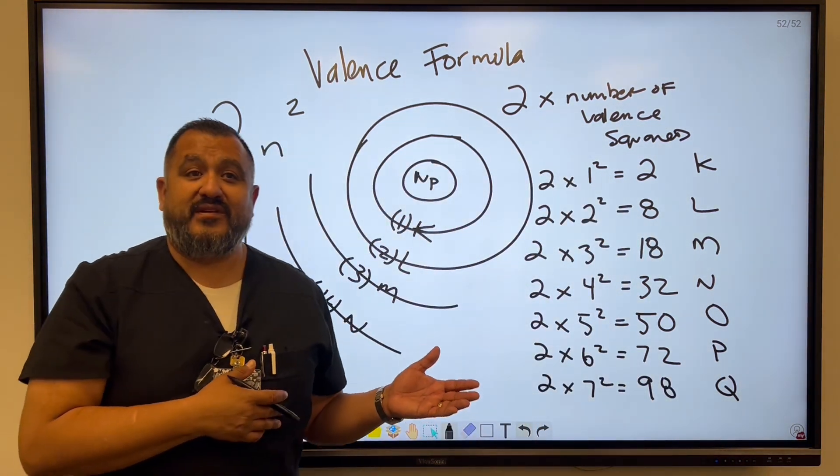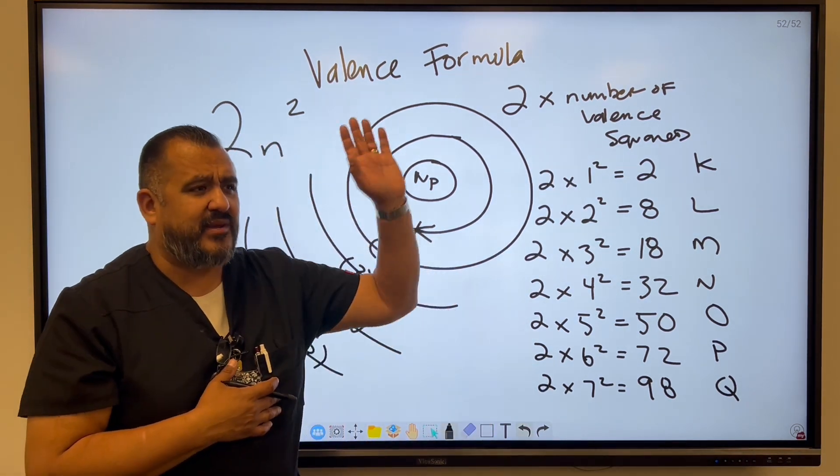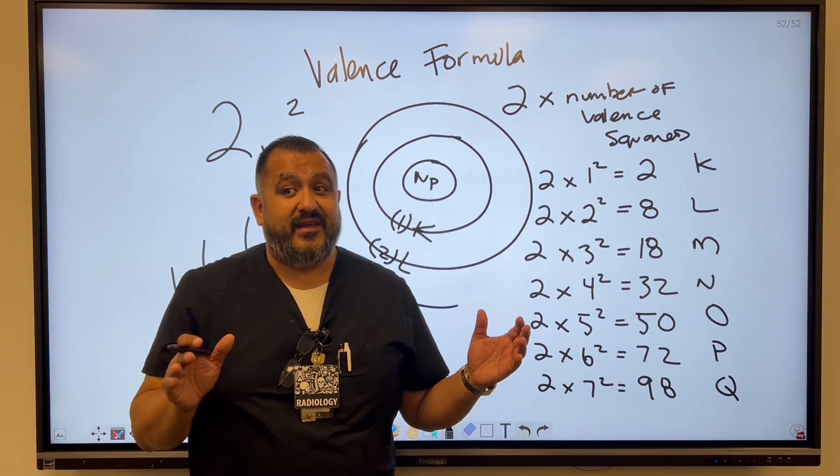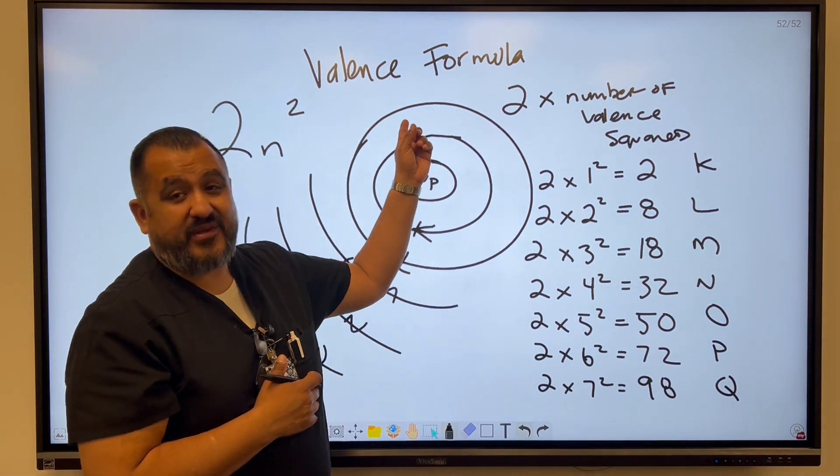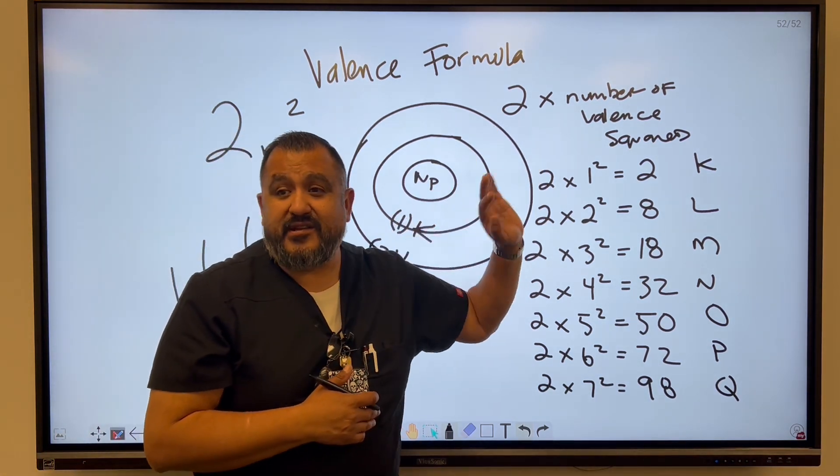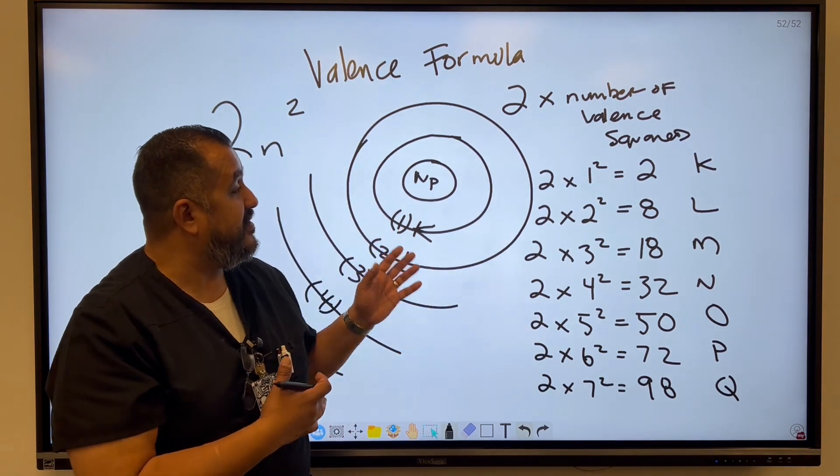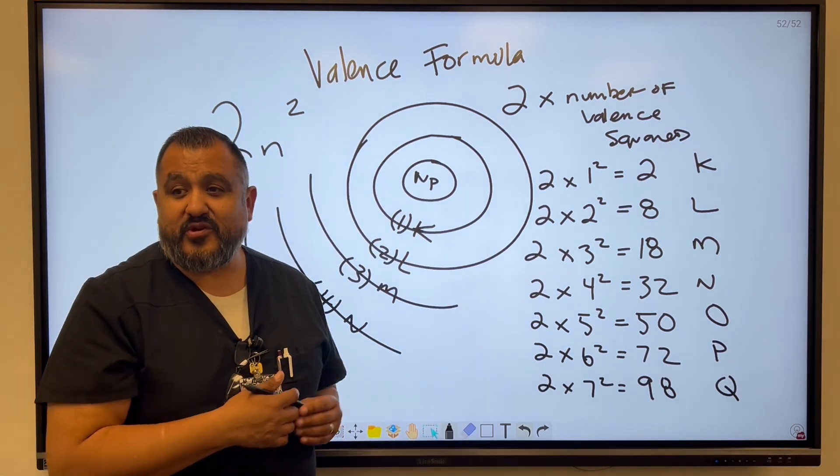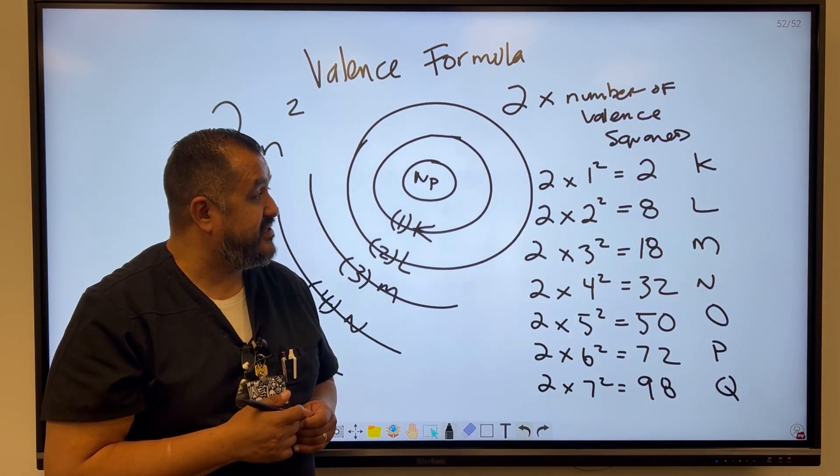So this is your valence formula. Instead of having to memorize this, I get students a lot of times asking can I just memorize them? I'm like, go right ahead. But hey, you know what? I'm not going to memorize them. I'm just going to know the formula. I'm going to know that there are 7 energy levels that can be there. And I'm just going to plug in the numbers. If I have to do a little math, then I'll do a little math. But here is the valence formula. I'm hoping that this little short tutorial will help you guys.